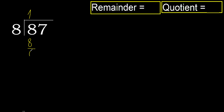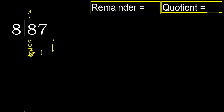Subtract 0. Next, eliminate 0 on this side. 7 is less, therefore next. That is not a number, therefore finish it — therefore complete.